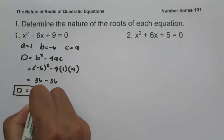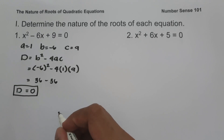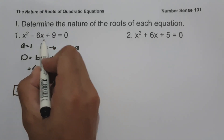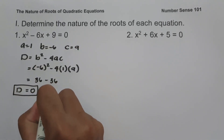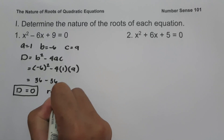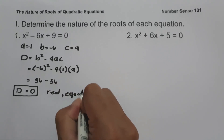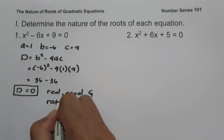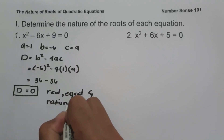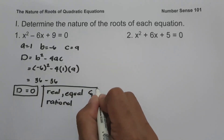Since the discriminant is equal to 0, the roots of x squared minus 6x plus 9 are real, equal, and rational. And this will be our answer.